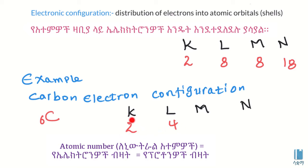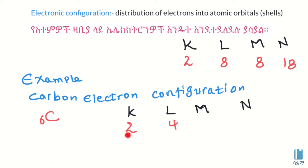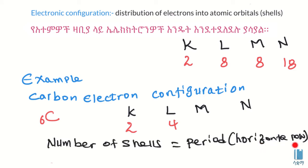The electrons are distributed so that the outermost shell contains the valence electrons. The number of shells is related to the period. This means the carbon electron configuration determines its period. The electronic configuration also determines the group.